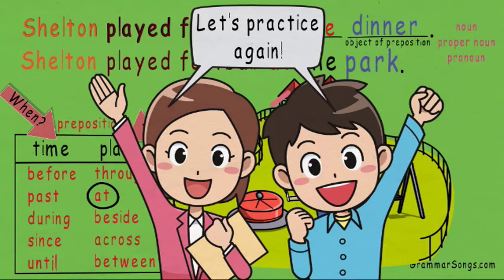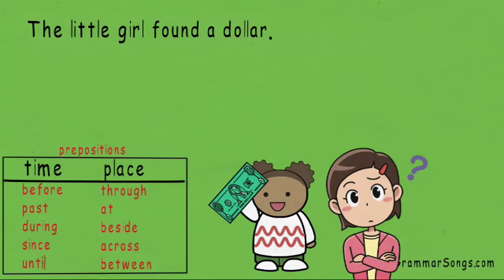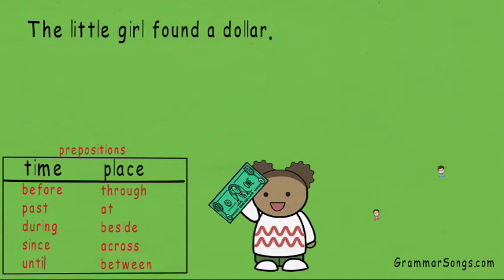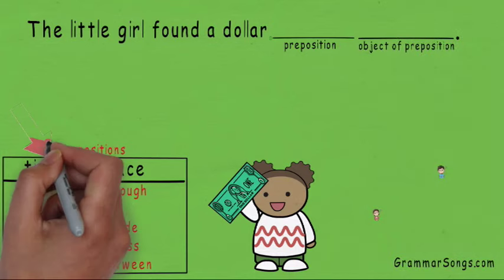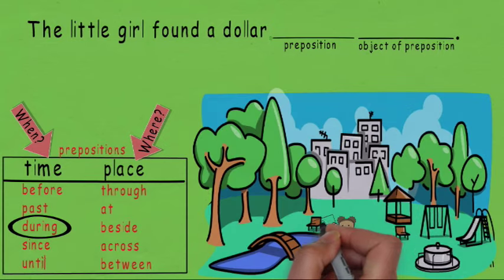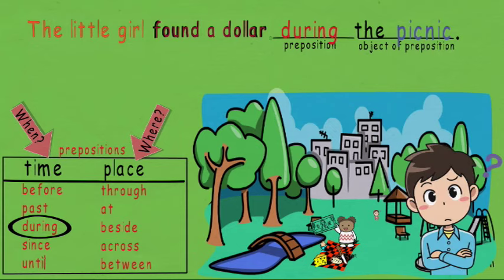Let's practice again. The little girl found a dollar. A prepositional phrase includes a preposition and an object of the preposition to tell when something happened or where it occurred. So when did she find it? Little girl, when did you find the dollar? I found it during the picnic. So: the little girl, subject, found a dollar, predicate, during the picnic, prepositional phrase. During the picnic is a prepositional phrase that tells when.